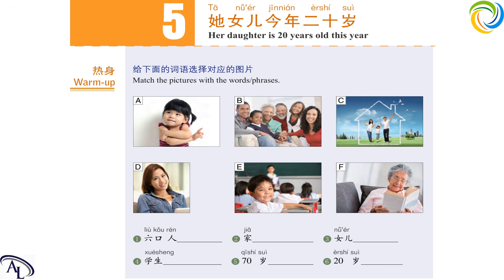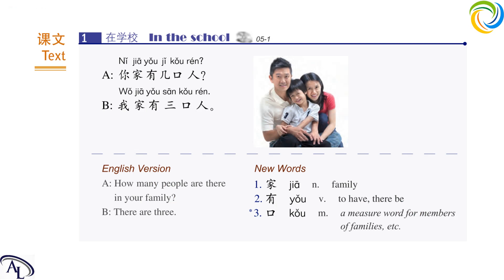第五课：她女儿今年二十岁。Lesson 5: Her daughter is 20 years old this year. 课文 1 Text 1.